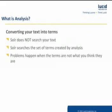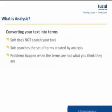What is analysis? Analysis is what Solr does to convert your text into a series of terms. Solr does not search text — that's a common misconception. Solr searches the set of terms that it creates by analyzing your text. This can cause problems if the terms it's producing are not the terms that you expect.